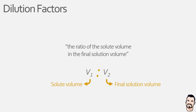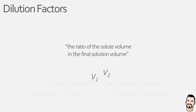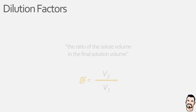Our solute volume acts as the antecedent on the left side of the ratio whereas the final solution volume acts as a consequent on the right side of the ratio. So to calculate our dilution factor we divide our consequent by our antecedent, meaning our final solution V2 is divided by our solute volume V1. Now to help better understand this let's look at a couple of examples.